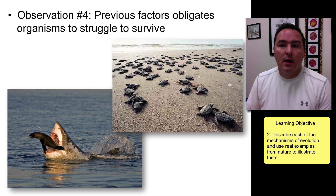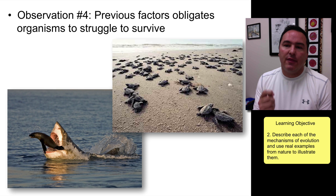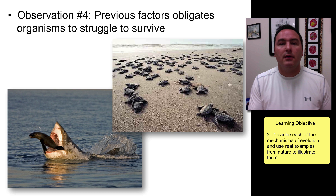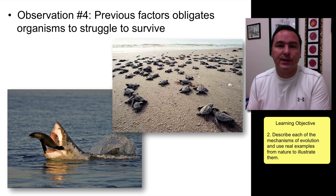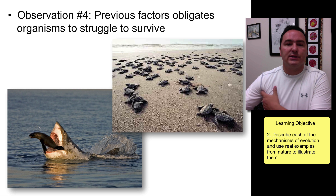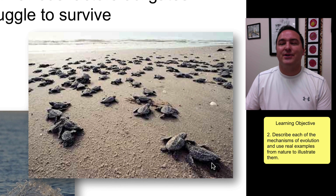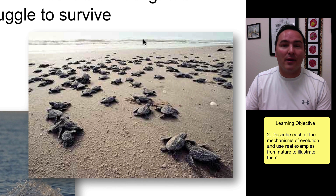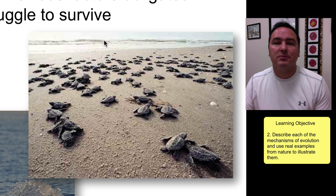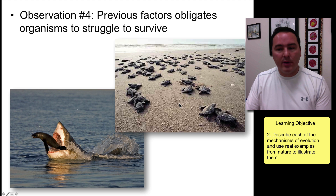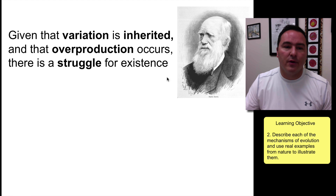Number four: if you take into account the three previous observations, you are required to see that organisms struggle to survive. Those that are best at surviving live long enough to reproduce and pass on their characteristics to their offspring. There is a struggle to survive — like this seal trying to get away from a white shark, or all these turtles, where only a small percentage will make it to adulthood and come back to reproduce.